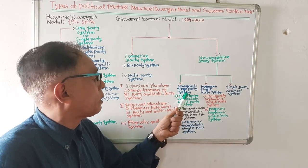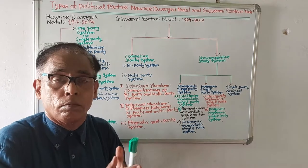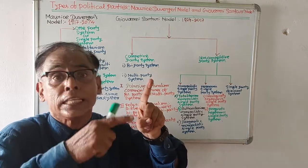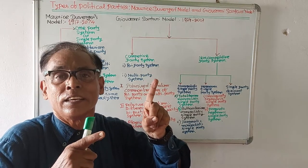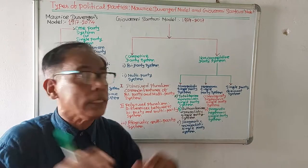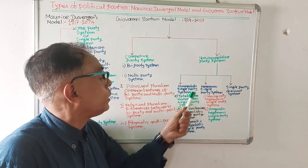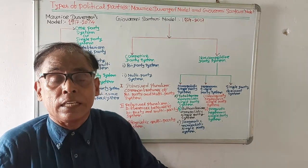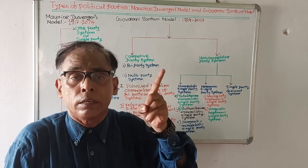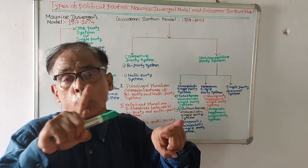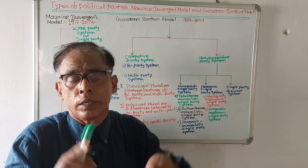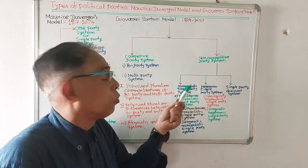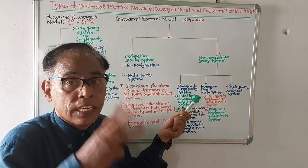Monopolistic single party system means if in a country there will be only one powerful party, it has a monopoly, and it allows no other party to exist. The monopolistic single party system has three subtypes. One is the totalitarian monopolistic single party system, where there is only one party, it is very powerful, it allows no opposition, and it forces all to adopt its ideology.